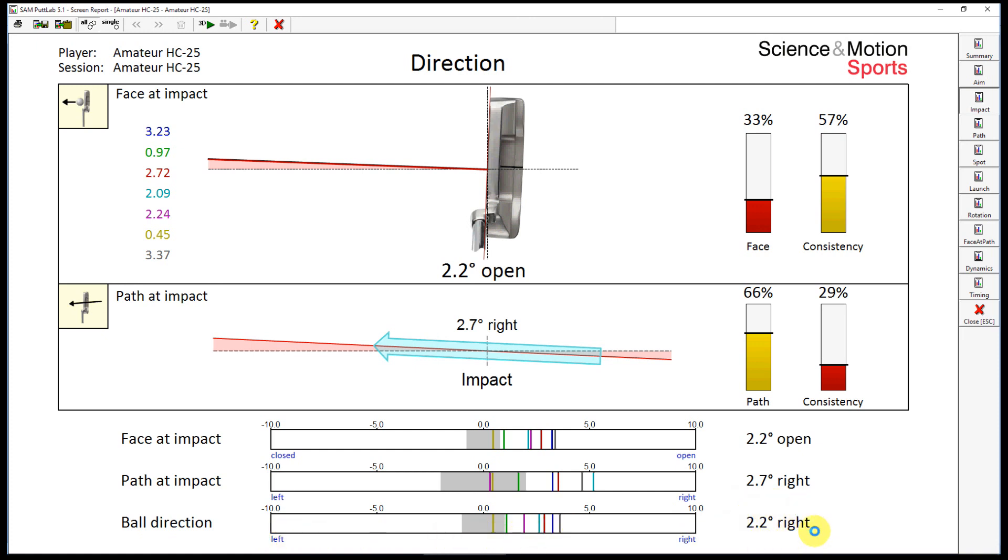You see the average ball direction for this golfer is 2.2 degrees to the right, and the gray area would match to plus or minus 0.8 degrees, which is roughly the width of the hole on a 4 meter putt. So we will see that this golfer would start one putt into the direction of the hole, and he would miss the hole on a 4 meter putt for the other six putts.